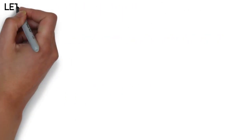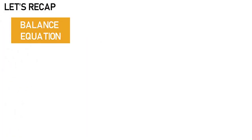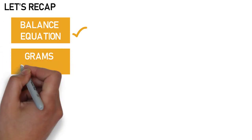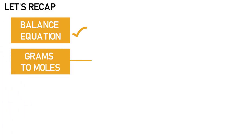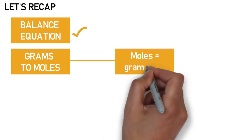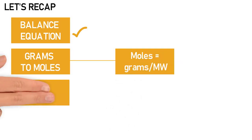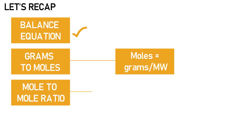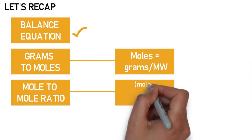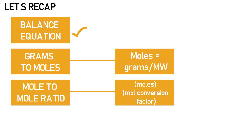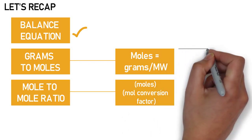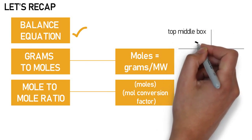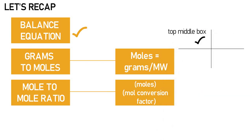Let's recap the steps for doing a mass-to-mass stoichiometry problem. We begin by making sure the equation is balanced — this ensures we have the right conversion factor for the mole-to-mole ratio. Once balanced, we find the moles of the substance we are given by taking the grams of that substance and dividing by its molecular weight. Next we do our mole-to-mole ratio by taking those moles and multiplying by the mole conversion factor.